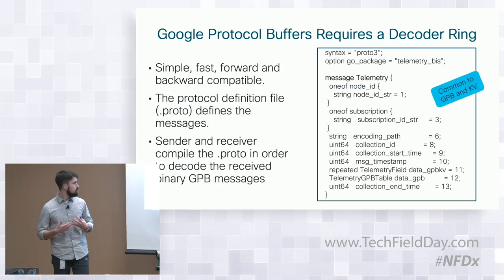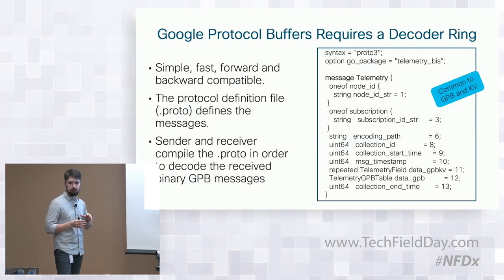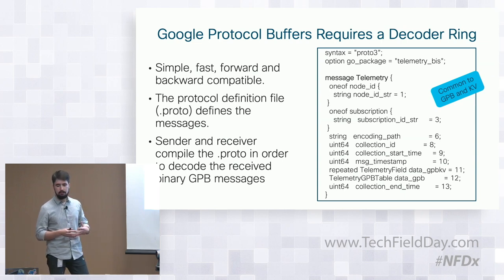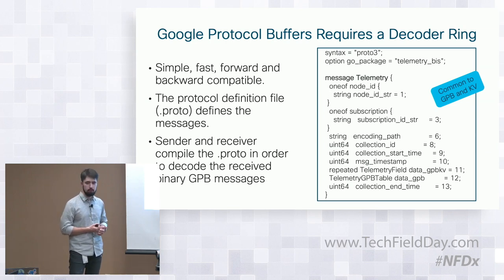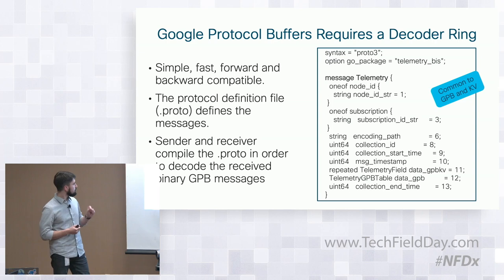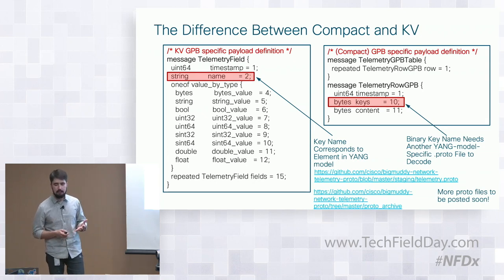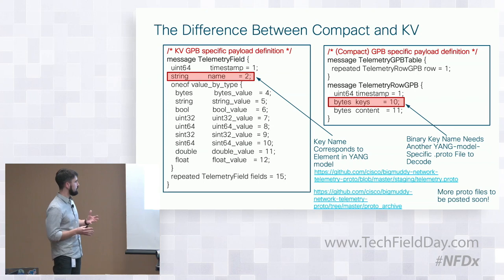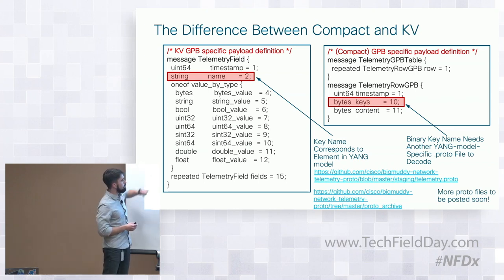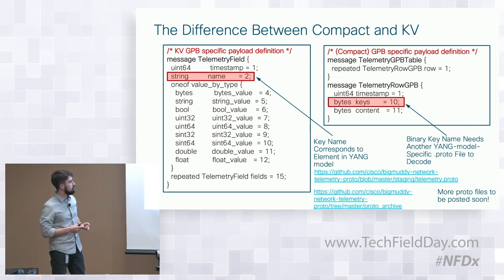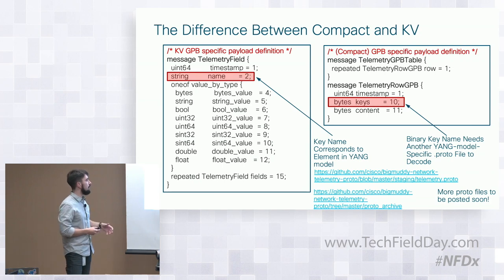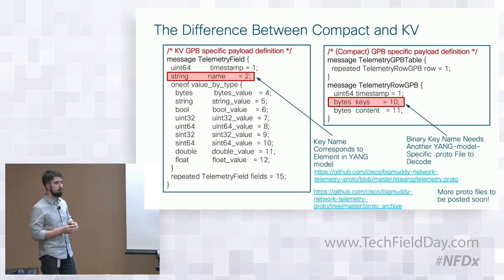Google Protobufs require a decoder ring. The beauty of GPB is that it is extremely simple, fast, and backward compatible. As a disadvantage, you need some tooling to encode and decode your message, and proto files should be generated to help with encoding. Looking at the difference between k-value GPB and compact GPB: in k-value GPB, key name corresponds to an element in the YANG model. In compact format, binary key needs another YANG model and specific proto file to decode, and all these proto files will be published pretty soon.